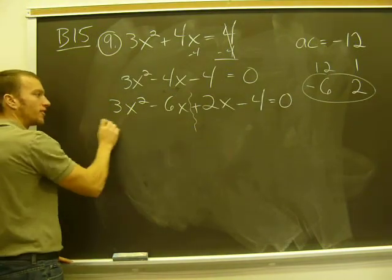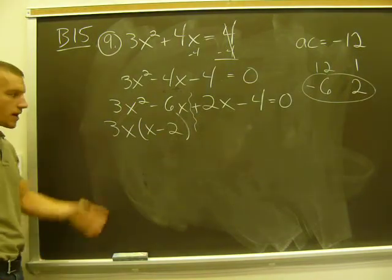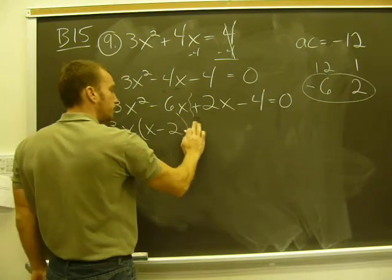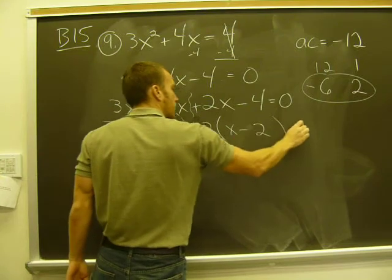So I'm going to split it up there. Greatest common factor would be a 3x. Factor that out. x minus 2. Over here, greatest common factor would be 2, positive 2. If I factor that out, I get an x minus 2.